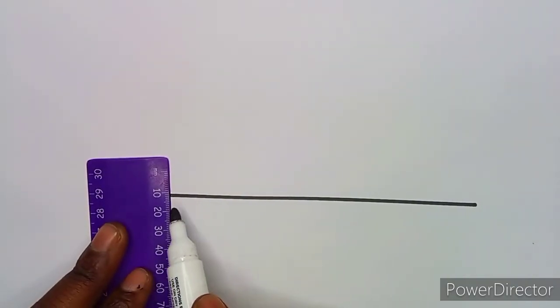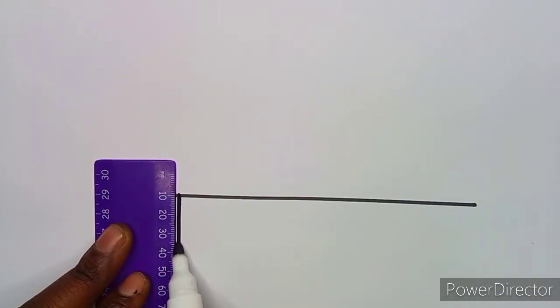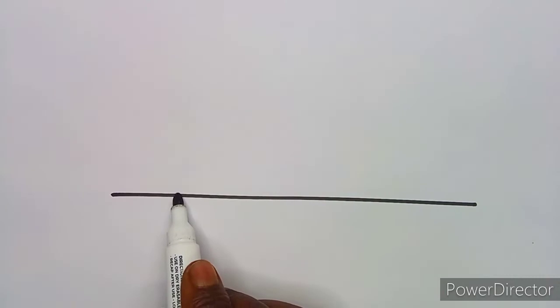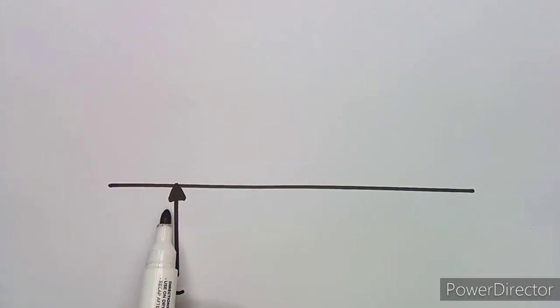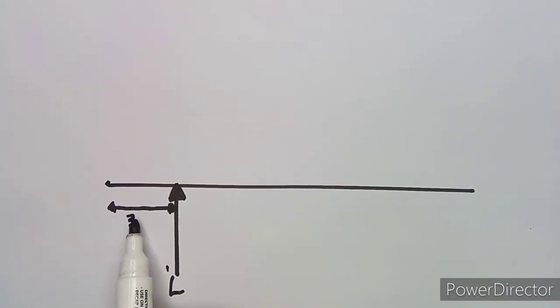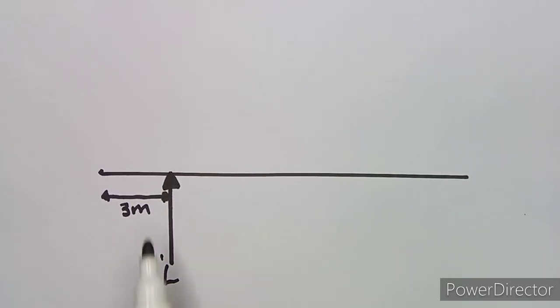A support always faces upwards — you must know that. So support L is drawn pointing upwards. This support L is three meters from the left end, which we indicate on the diagram. The support arrow points upward.